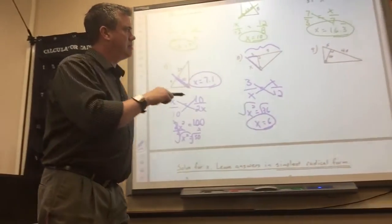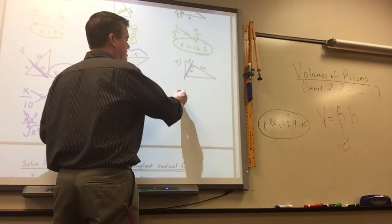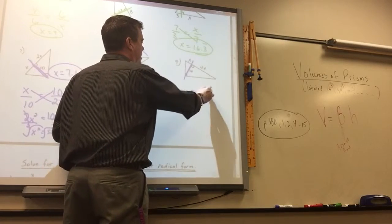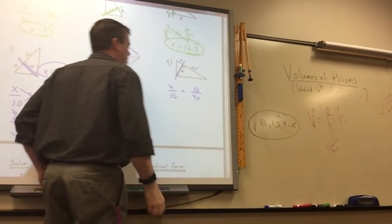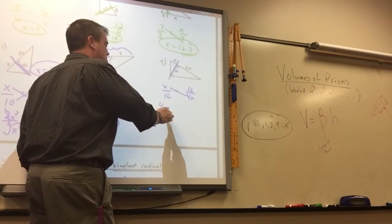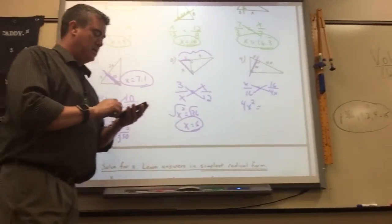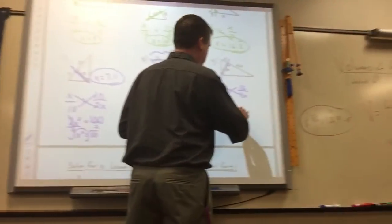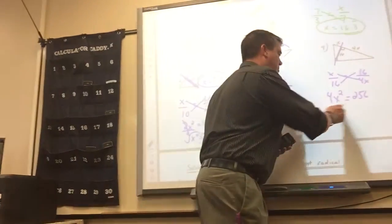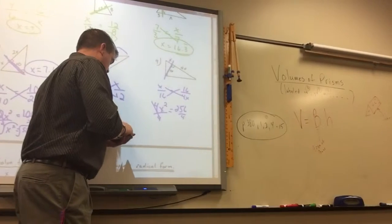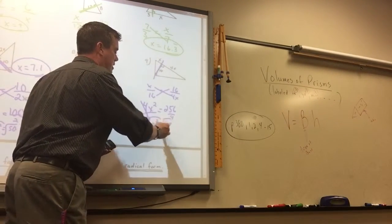Number 9 is like 7 because you're going to have the x's in there. It's set up the same way, just different numbers. 16 is the geometric mean, and then you put this part and that part. So x times 4x is 4x squared. 16 times 16 is 256. Divide by 4, then square root. That's 64, and when you square root it, you get 8.